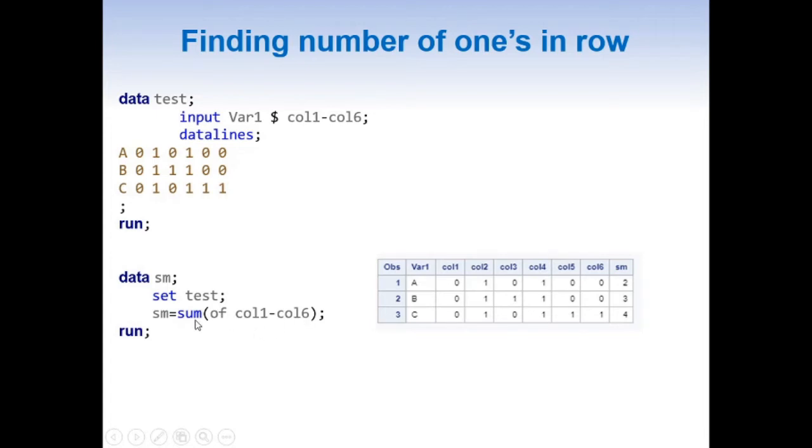Here we are mentioning sum of col1 to col6, and as we have only 0s and 1s, this gives us total number of 1s we have in a row.